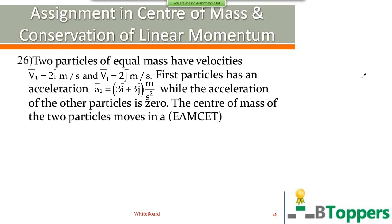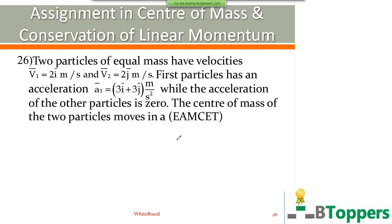Question number 26, which was given in one of the previous AIIMS exam papers also. Two particles of equal mass have velocities V1 = 2î m/s and V2 = 2ĵ m/s. The first particle has an acceleration A1 = 3î + 3ĵ m/s², while the acceleration of the other particle is zero. The center of mass of the two particles moves in — you have to find the nature of the path along which the center of mass moves. Let us find the velocity and acceleration of the center of mass.